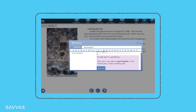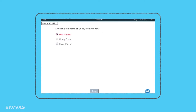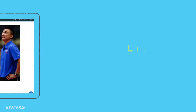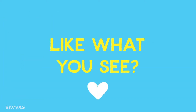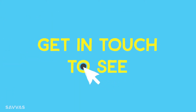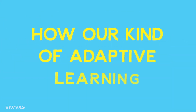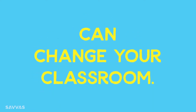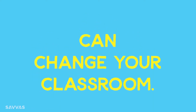Questions at the end confirm understanding. If students get an answer wrong, SuccessMaker sends them back to the passage to find evidence in the text to help them answer the question. Like what you see? Get in touch to see how our kind of adaptive learning can change your classroom.